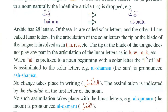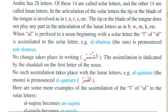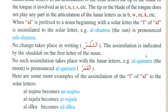The tip of the tongue does not play any part in the articulation of the Lunar letters, as in Ba, Meem, Kaaf, etc. When Al is prefixed to a noun beginning with a Solar letter, the Lam of Al is assimilated to that Solar letter. Example: Al-Shamsu — the sun — is pronounced Ash-Shamsu.